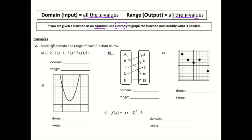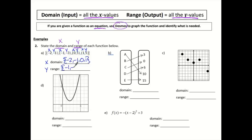For number two, it says state the domain — remember, which is x — and the range, which is y, for each of the functions below. When I have points here, I like to label them x and y. For my domain, which is x, I'm going to do these nice curly brackets and list all of the x values: negative 2, negative 1, 0, and 1. And for my range, I'm going to list all of the y values with curly brackets: negative 1, negative 3, 5. If we notice there's a second 5 here, I don't have to put it twice — you only need it once.